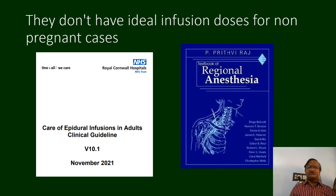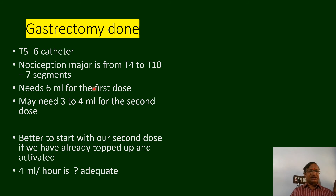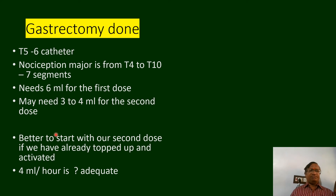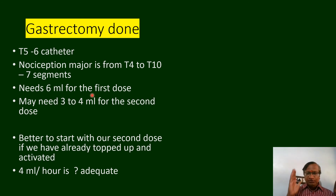Many books don't have ideal infusion protocols for non-pregnant patients. For a gastrectomy at T10, the nociceptive site is T4 to T10 — seven segments. With a catheter at T5-T6, the T7 dermatome requires 6 ml for the first dose, maybe 3 to 4 ml for the second dose. If you have a T6 catheter and are operating on T7 to T9, 4 ml per hour is enough; sometimes 3 ml top-up suffices.